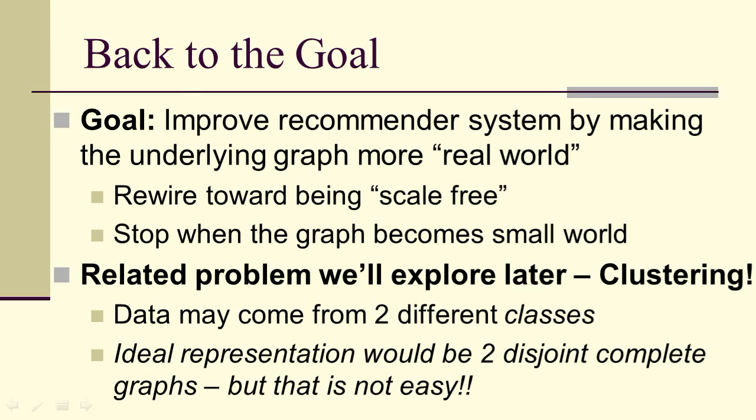Let's get back to the goal. We want to improve the recommender system by making the underlying graph more real world. In other words, we want to rewire toward being scale-free and stop when the graph becomes small world. Later on, we'll actually explore a different version of this idea, which is clustering—where you try to get highly similar clusters and low similarity between clusters. We'll be looking at it in just a limited case, just two classes. If we had two different classes of data, the ideal clustering representation would be two disjoint complete graphs, like a sub-economy model.